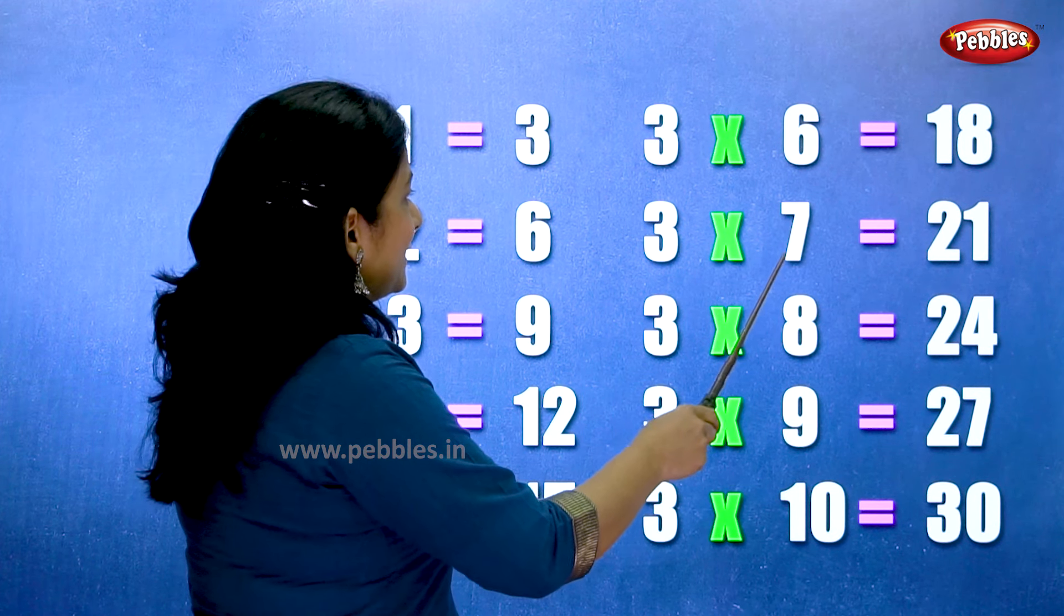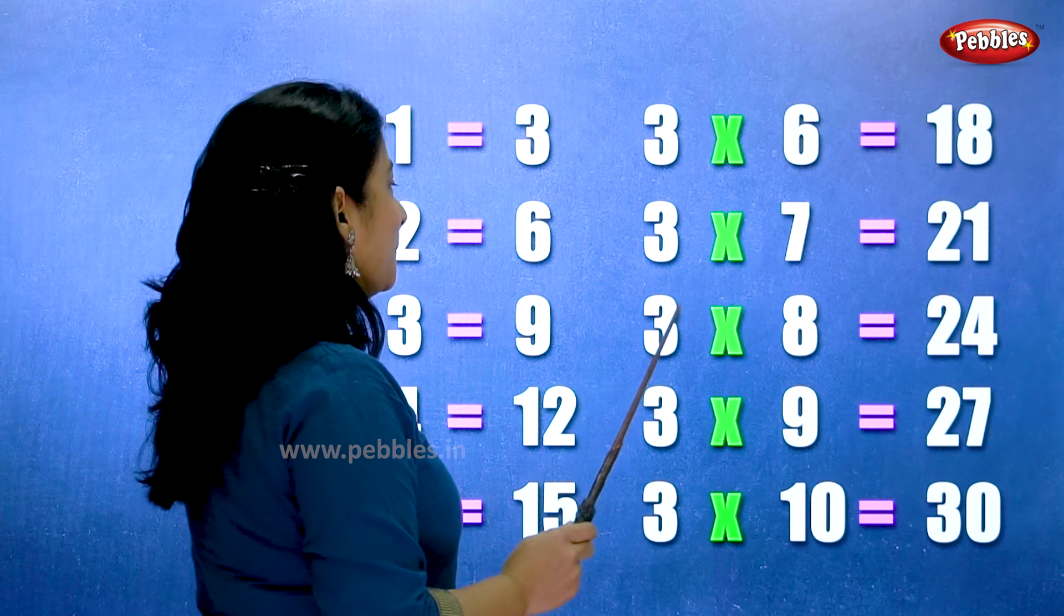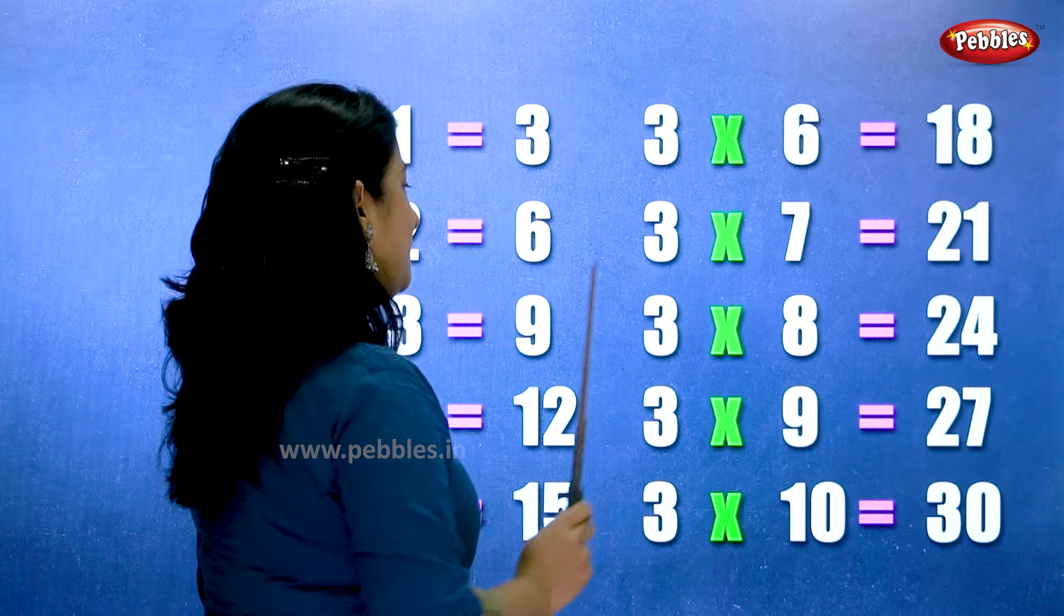Three sevens are twenty-one. Three eights are twenty-four.